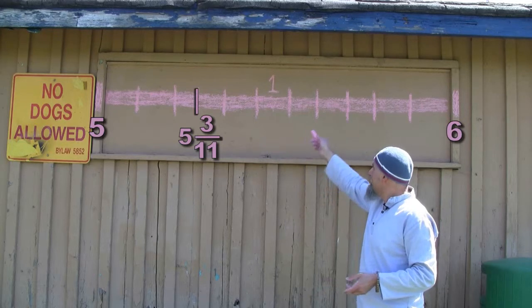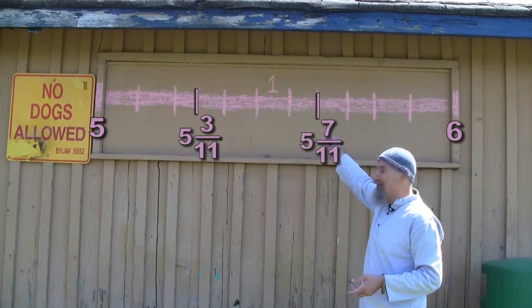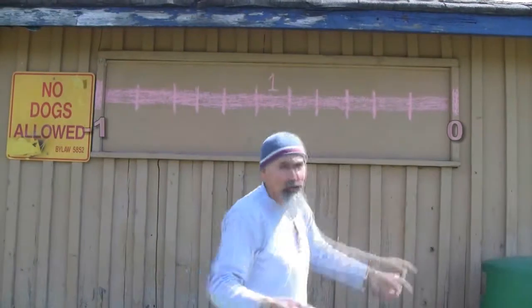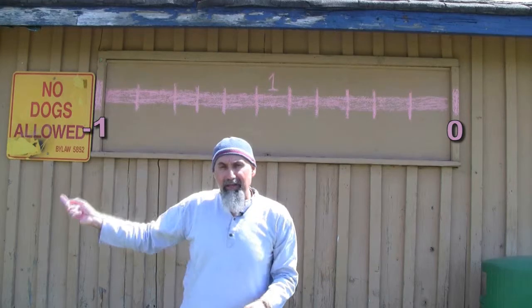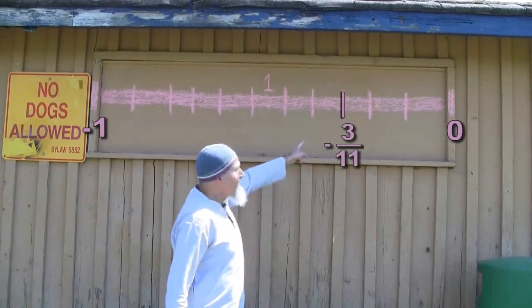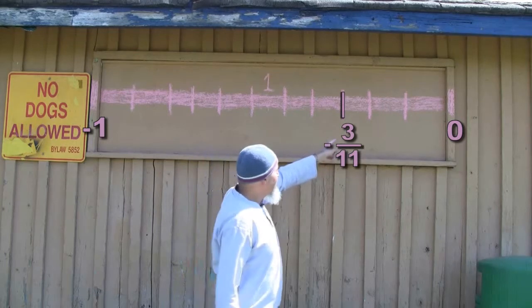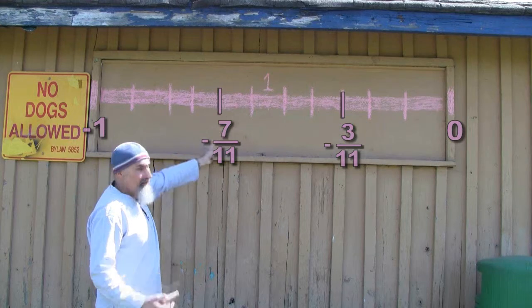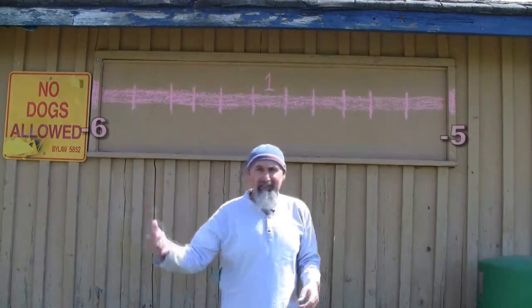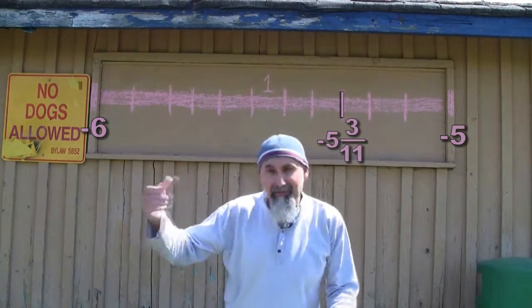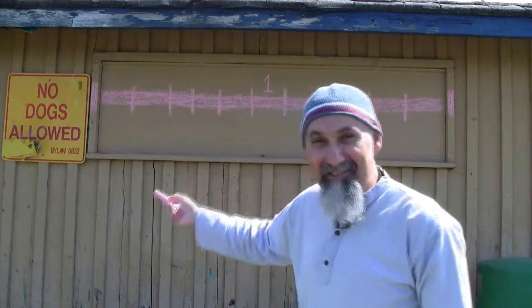One, two, three, four, five, six, seven — five and seven-elevenths, because that would be our six. If these were negative — zero to negative one — and we wanted negative three-elevenths: zero, one, two, three — negative three-elevenths. Negative seven-elevenths: one, two, three, four, five, six, seven. If this was negative five to negative six: negative five and three-elevenths is negative five, one, two, three; negative five and seven-elevenths, negative five and ten-elevenths, whatever it is.